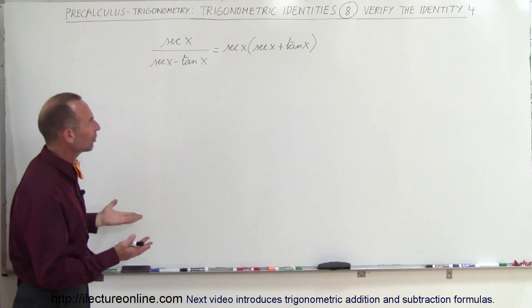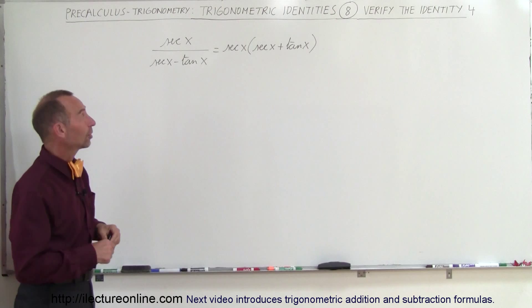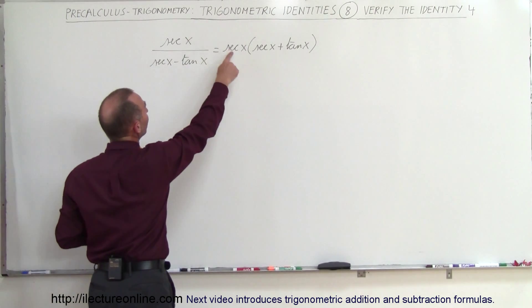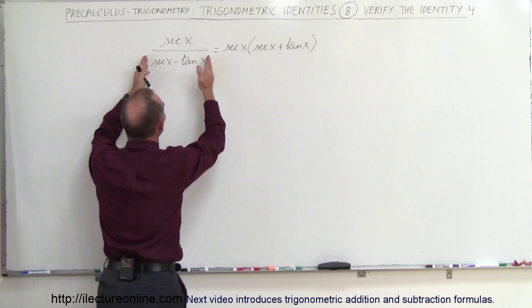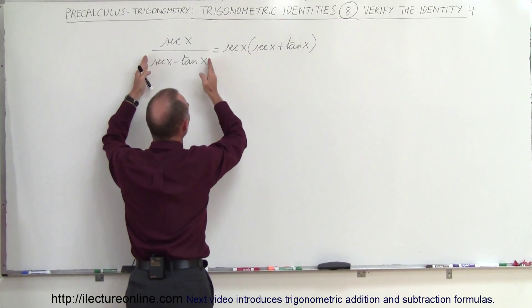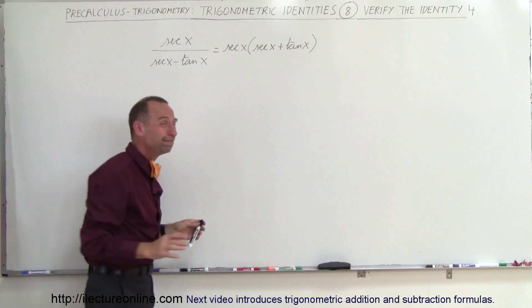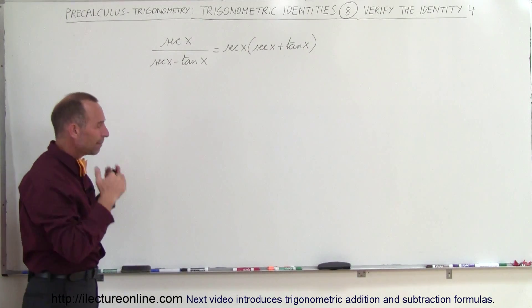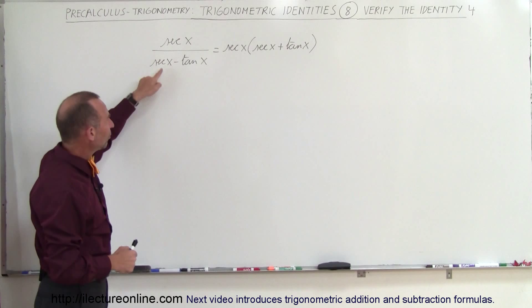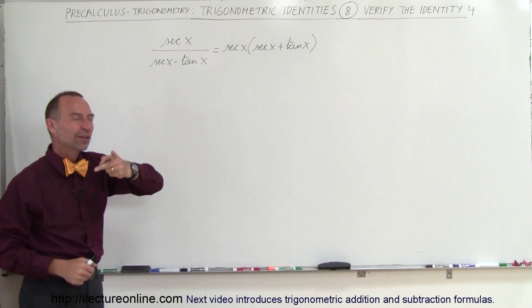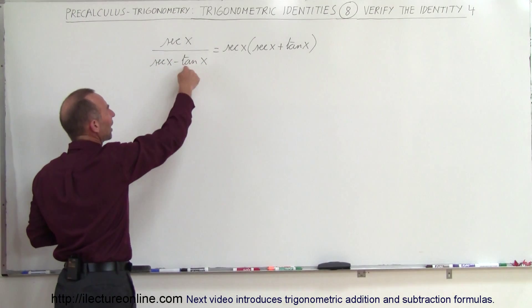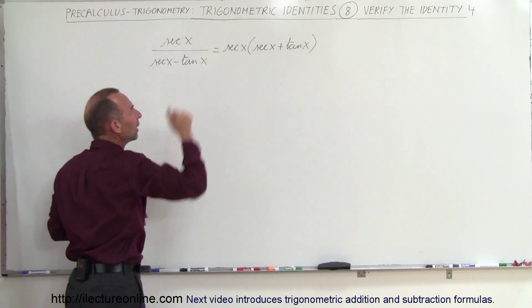It almost looks impossible that those two could be equal to each other. But at least on the left side you have a secant of x, you have a secant of x on the right side, you probably want to leave those there, so somehow this must be equal to this. So this in the denominator must equal that in the numerator. So in order to do that, my thinking is I have to turn this into a fraction because when I divide by a fraction, the same is multiplying by its inverse. So my strategy is turn this into a fraction so I can then write it in the numerator.